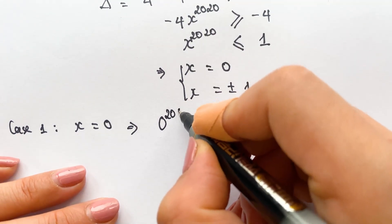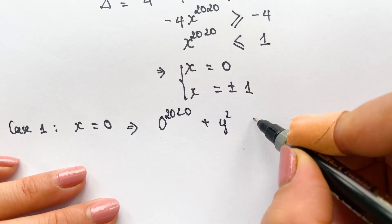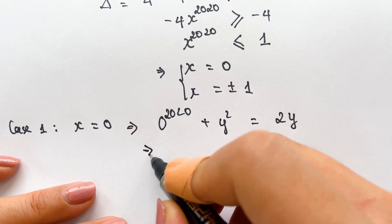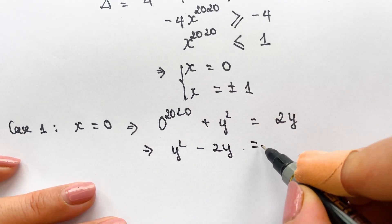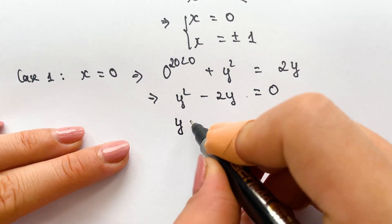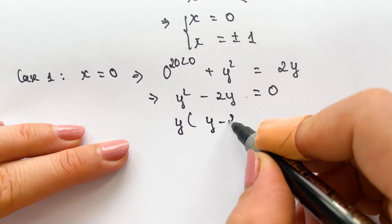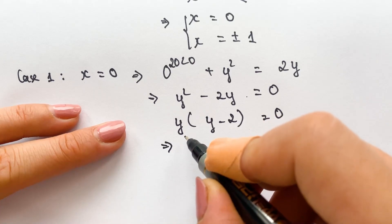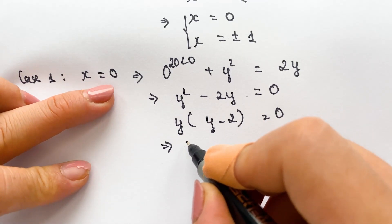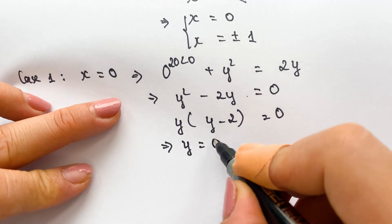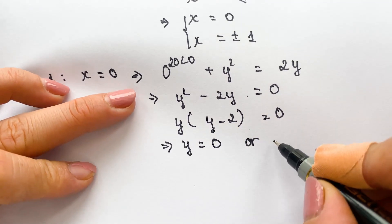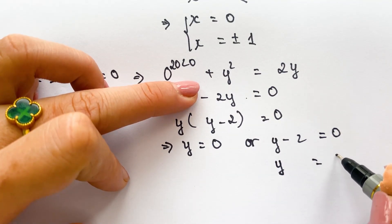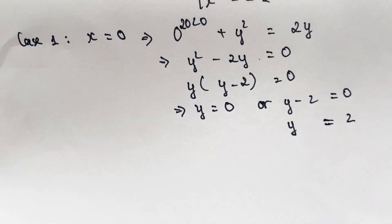Substituting x=0: 0^2020 plus y squared equals 2y, so y squared minus 2y equals 0. Then y is a common factor, giving y(y minus 2) equals 0. Therefore in case 1, x equals 0, we have y equals 0 and y equals 2.